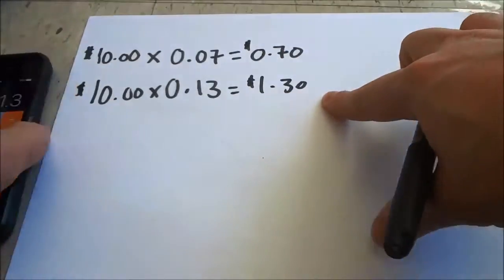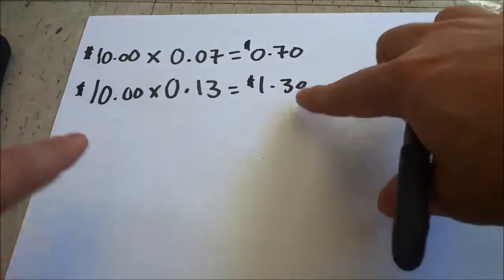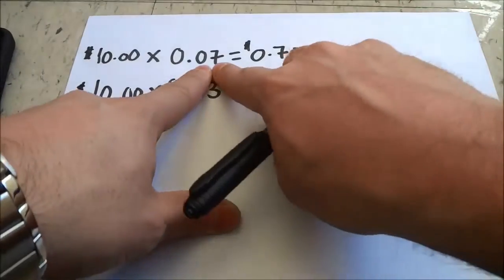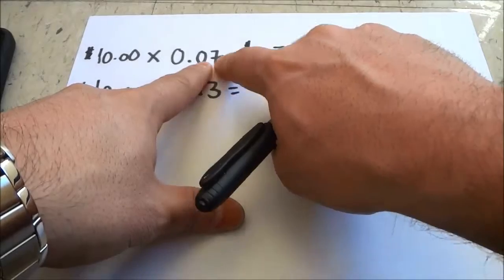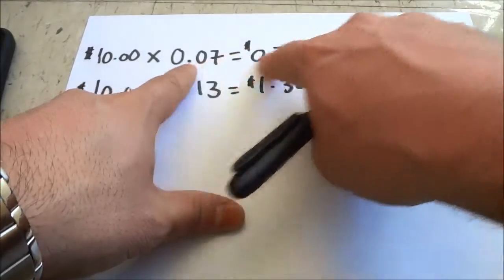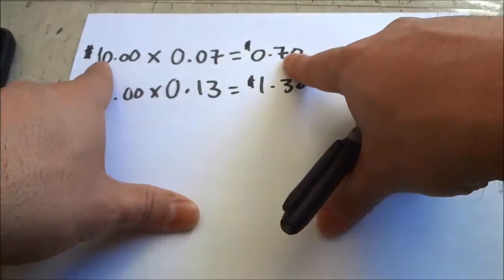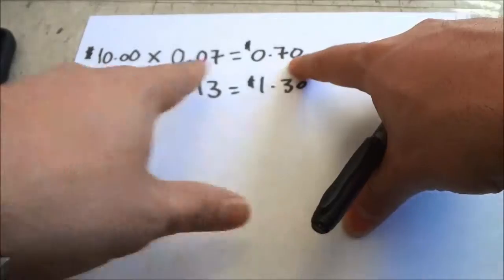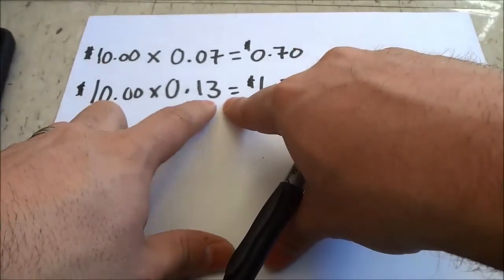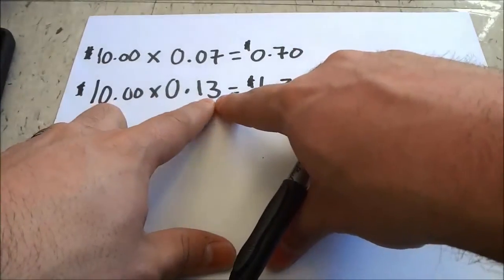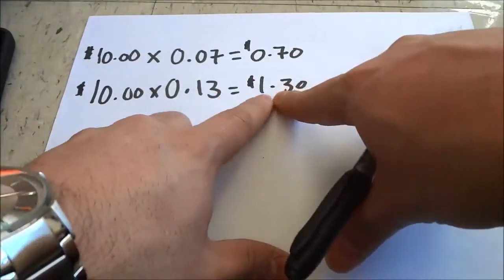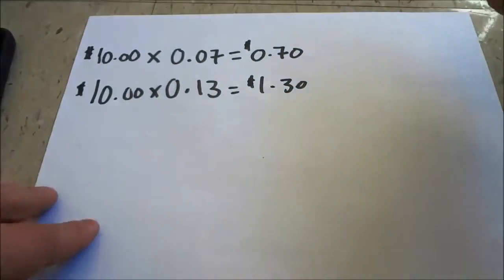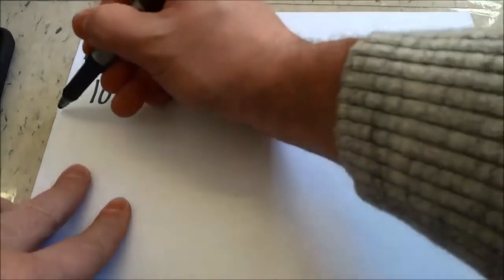That would be the sales tax on a product that costs ten dollars. So if the sales tax percentage was seven percent on a ten dollar product, you would be paying seventy cents in sales tax. If the sales tax percentage was thirteen percent on a ten dollar product, you would be paying a dollar and thirty cents. That is how you calculate just the sales tax.